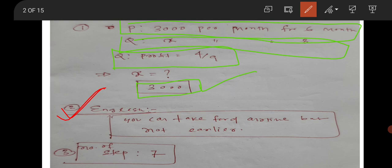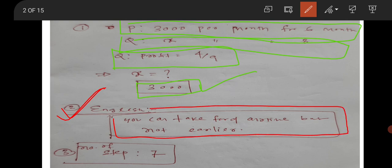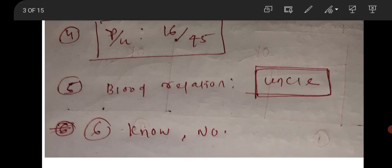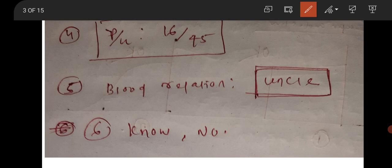After reading, which of the options is correct? The question was like that. I think the correct option will be something like 'you can take food anytime but not earlier than' something like that. Then there is a question on the number of steps required to move from P2 to P5 — the answer may be seven.